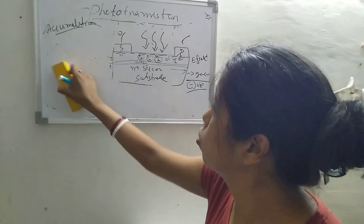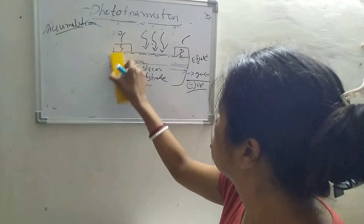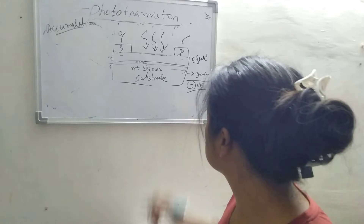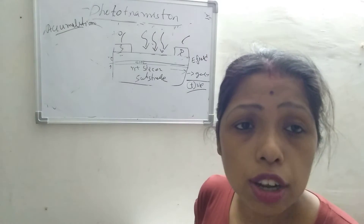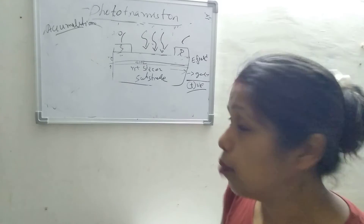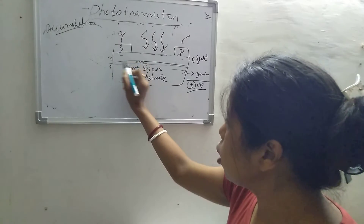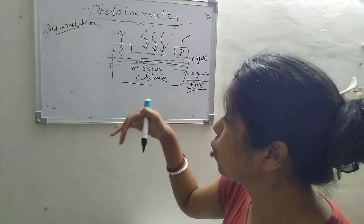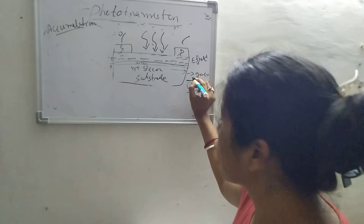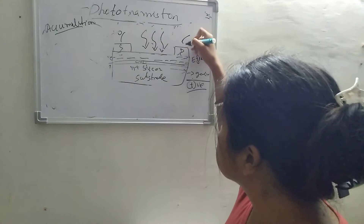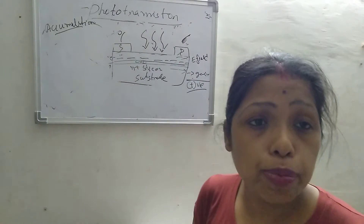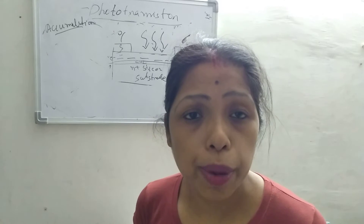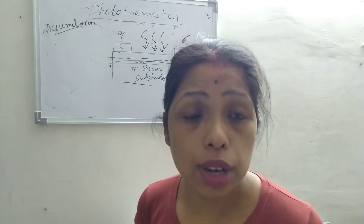Now, come to the accumulation mode. In case of the accumulation mode, instead of applying negative voltage at the gate terminal, we have to apply positive voltage at the gate terminal. Then electrons will be accumulated at the drain region and at the interface of the silicon layer and the semiconductor layer due to the positive voltage at the gate terminal. If we apply any voltage here, electrons will be collected by the drain terminal, and here we will get the device current. This is the accumulation mode.